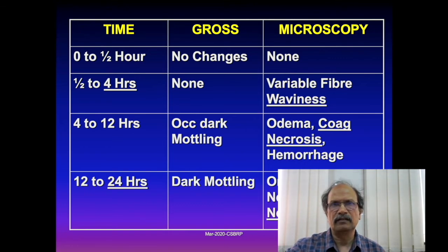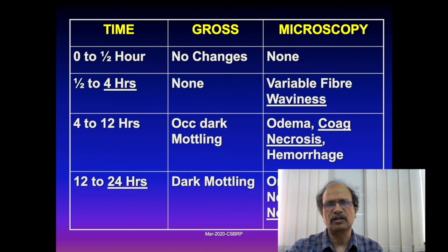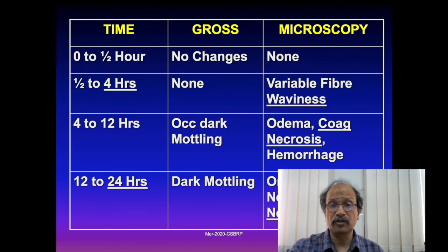In the first half hour, no changes can be appreciated either microscopically or grossly. By four hours, waviness of the muscle fibers may be seen microscopically, but nothing grossly. From four to twelve hours, occasional darkening and mottling of the infarction area is appreciated grossly, with onset of coagulative necrosis microscopically.